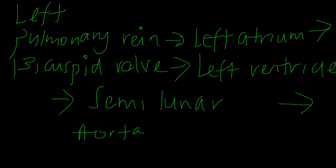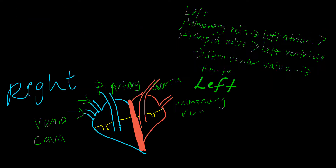As a recap, on the left portion of the heart — the oxygenated portion — blood enters through the pulmonary vein from the lungs into the left atrium. It passes through the bicuspid valve into the left ventricle, then through the semilunar valve into the aorta. Relating that back to the drawing: blood enters the pulmonary vein into the left atrium, passes the bicuspid valve into the left ventricle, then passes the semilunar valve and enters the aorta.